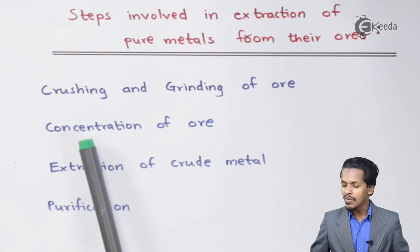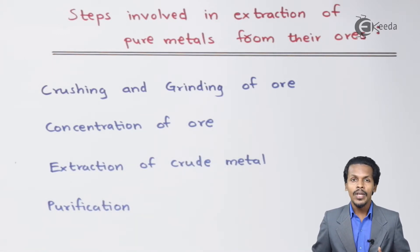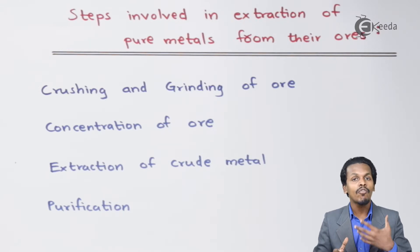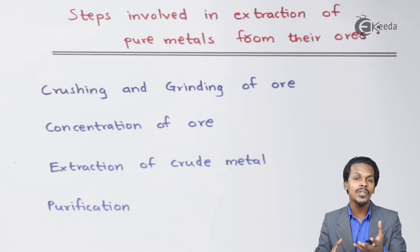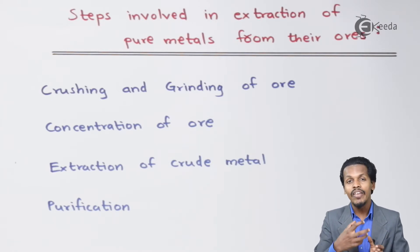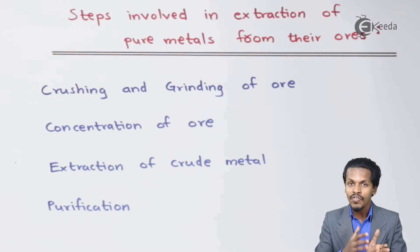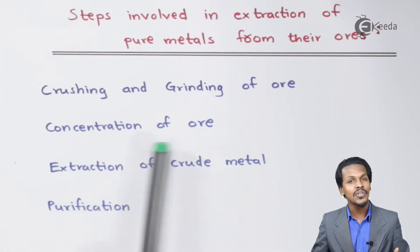Talking about the next point, that is concentration of the ore. Once we have crushed the ore, there would be other impurities that are evolved. To remove these impurities — which are known as gangue — the process of removal of impurity is basically known as concentration of ore.